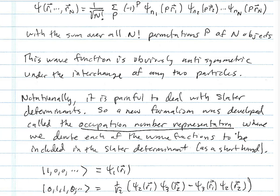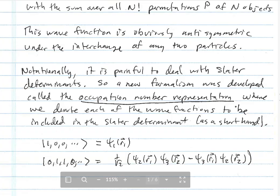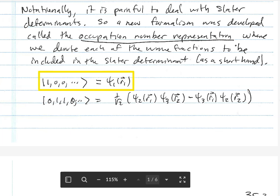This representation is really quite painful. All we really need to know is what the different single particle states are, and then we can construct the many-body wave function that is completely anti-symmetric using this procedure. Because it's notationally difficult to deal with these Slater determinants, a new formalism was developed called the occupation number representation. We've already had some experience with this when we talked about photons, but here we're looking at it for fermions, and there are a lot of differences.